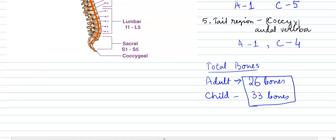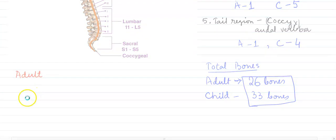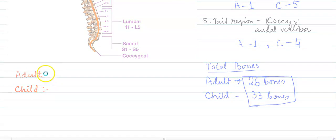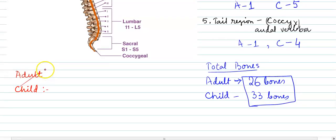First, we will write adult's condition. Adult, and in the second case, we will write child. Here comes this type of question. So in adult's condition, as we have told: C, T, L, S, and CD. You call it CD bones.